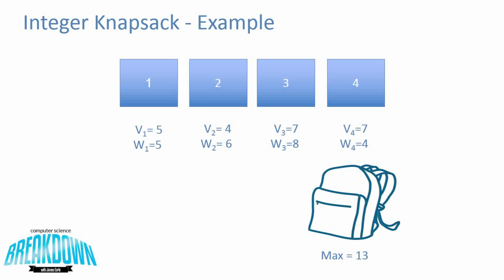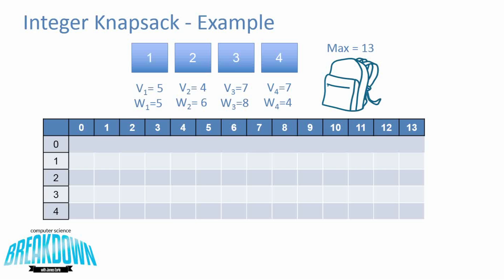Now let's come back to the example and walk through how to build this table. For the first case in the recurrence, row 0 and column 0 are all set to 0. Looking at space (1,1): the maximum weight of 1 is less than the weight of item 1, so it's 0. This applies to all columns until the fifth column, when the maximum weight equals the weight of item 1. So we fill in all zeros up to that point.